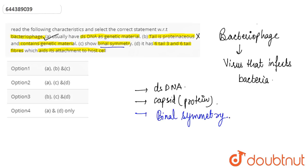So statement C is also correct. The last one is that it has six tail fibers which aids in attachment to the host cell. This is correct because bacteriophages are able to infect bacteria by using their tail.